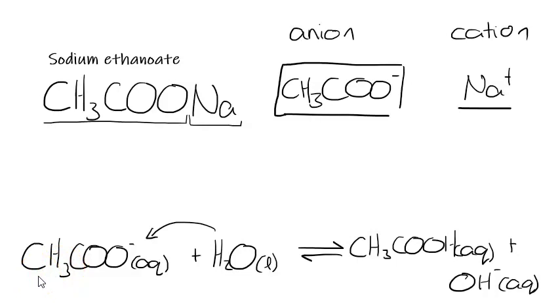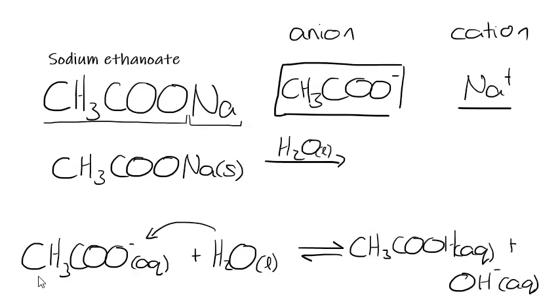So if you get a question like this, it'll say show whether sodium ethanoate can act as an acid or a base, and use two equations to show your answer. The first equation would be showing the dissociation, or the dissolution, of sodium ethanoate in water. So you would write CH3COONa solid, and then when we put that into water, we end up with these two ions.